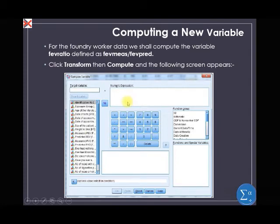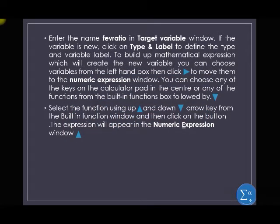After you get to this screen, enter the name 'FEV ratio' in the target variable field. This is the name of the new variable we want to compute. If the variable is new, click on Type and Label to define the type and variable label. To build the mathematical expression, you can choose values from the left-hand box, then click to move them to the numerical expression window. You can also use the calculator pad or built-in functions. Select the function using the up and down arrow keys from the built-in functions window, then click the button to add it.